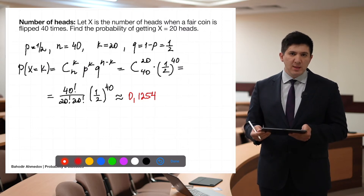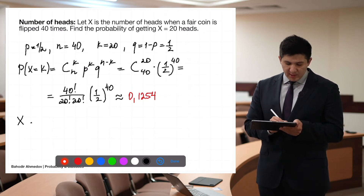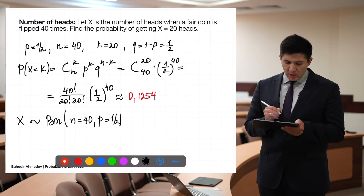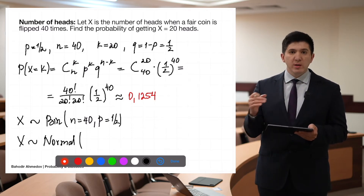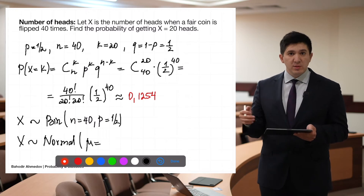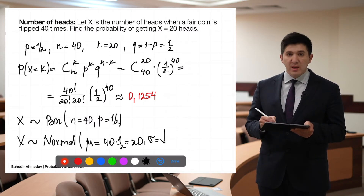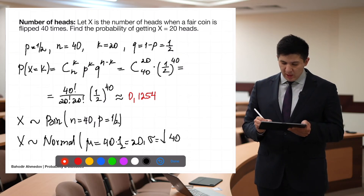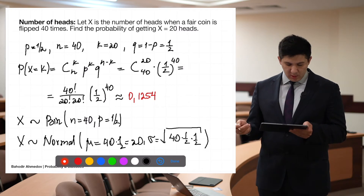Now we are going to estimate this result using the normal distribution. For X ~ Binomial(n=40, p=1/2), we approximate X with a normal distribution. The mean is μ = np = 40 × (1/2) = 20, and the standard deviation is σ = √(npq) = √(40 × 1/2 × 1/2) = √10.